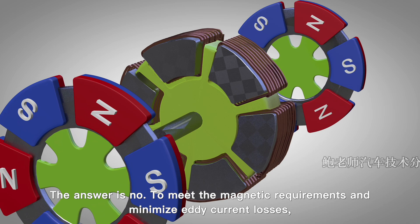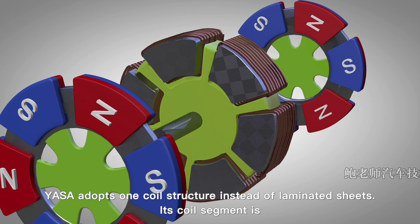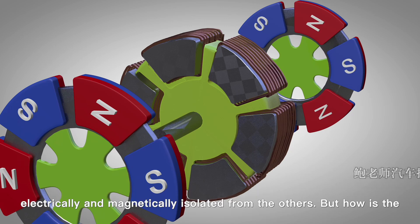To meet the magnetic requirements and minimize eddy current losses, YASA adopts a wound coil structure instead of laminated steel. Each coil segment is electrically and magnetically isolated from the others.